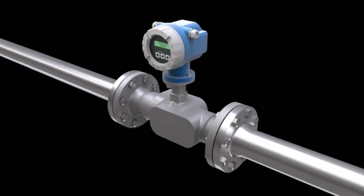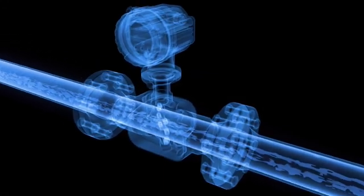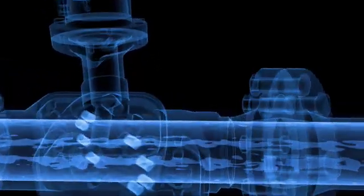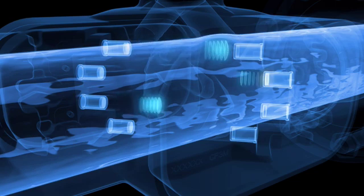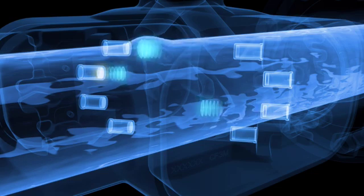Here is how this measurement method works. Inside the ultrasonic flow meter, pairs of sensors are fitted across from each other in the measuring tube. Each sensor can alternately transmit and receive an ultrasonic signal. Simultaneously, the transit times of these signals are measured.